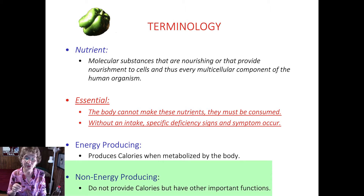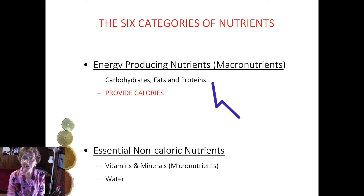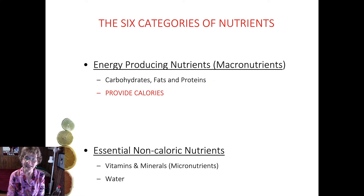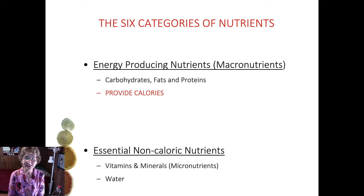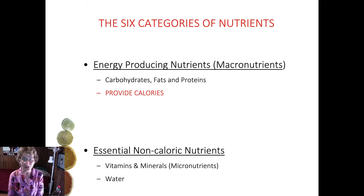Non-energy-producing nutrients do not provide calories but can have other important functions. We have six categories of nutrients. We have the macronutrients — the ones that provide us with calories — and these are proteins, carbohydrates, and fats. And then we have the essential non-energy or non-caloric nutrients: our vitamins and minerals, which can also be referred to as micronutrients, and water.